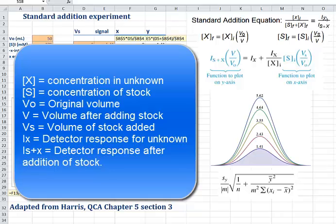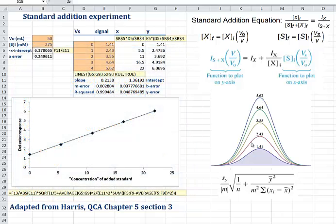IX is the intensity of the signal response or detector response of our unknown, and IS+X is the intensity after we've added some stock solution. I've got a trivial example here. Let's say this results from an HPLC chromatogram. We start off with our unknown, which is the shaded region, and let's say that has a response of 1.41 detector units. Each subsequent one represents additions of our stock solution, and the numbers here are the height of the peak after those additions.